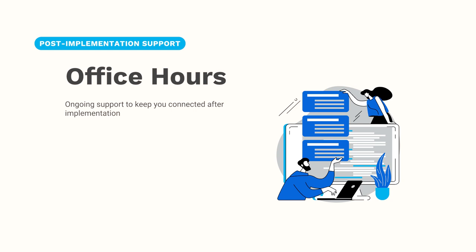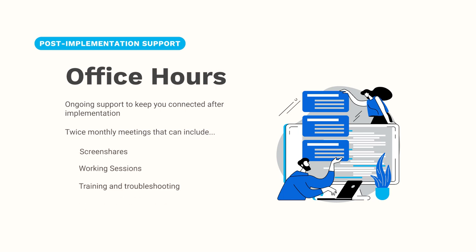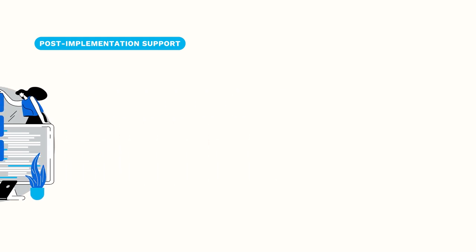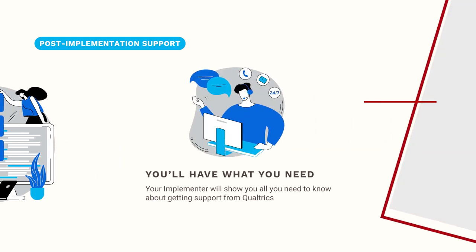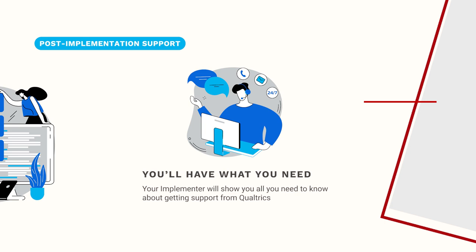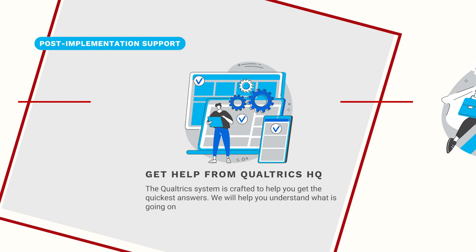Like the calls during implementation, your office hours can be used as screen shares, working sessions, training, troubleshooting, and mapping out your growing use of the XM platform. Whether or not you purchase office hours or other ongoing support from Red Pepper, before your implementation ends your implementer will cover how to contact the 24/7 Qualtrics customer support team, and explain the benefits and limitations of the standard support that comes with your Qualtrics license. Standard Qualtrics support is a ticket-based system and we will provide you with basic training on creating and following a ticket.